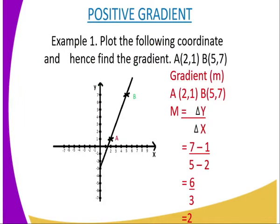To the first example here, we have positive gradient. Example 1: Plot the following coordinates and hence find the gradient. You have coordinate A (2,1) and coordinate B (5,7). You can see on the x-axis, there is 2. You rise up to where we have 1 on the y-axis, and you make an X there to plot that coordinate. Then you go to coordinate B, that is 5 and 7. You move where 5 is, then you rise up to where we have 7, put an X there, and then you join the two with a straight line.